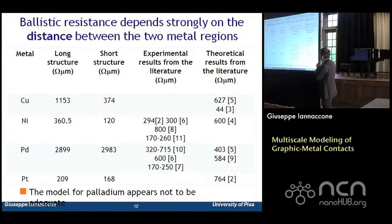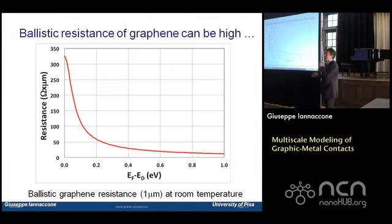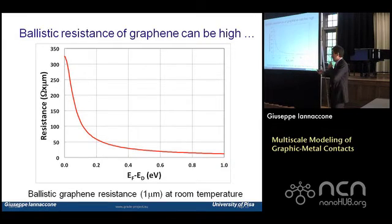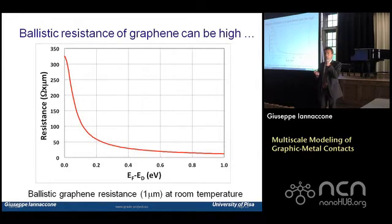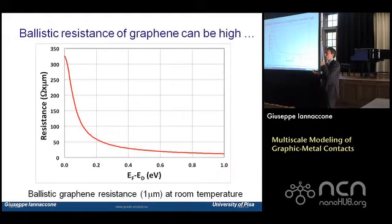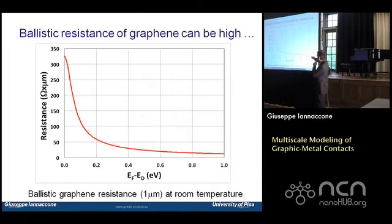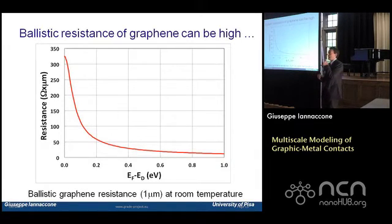Why such a large difference? The ballistic resistance of an infinite graphene sheet varies a lot as a function of the energy of the Dirac point — it can go up to more than 300 ohm·μm. For a good contact we need something smaller than 100 ohm·μm, so we need to push the energy of the Dirac point far away from the Fermi energy.